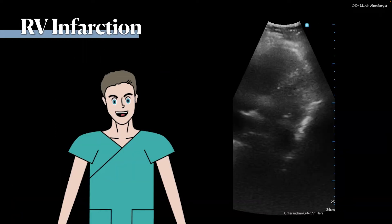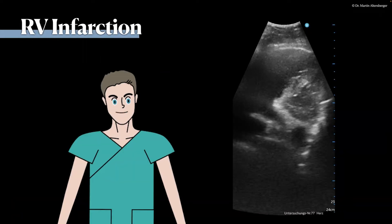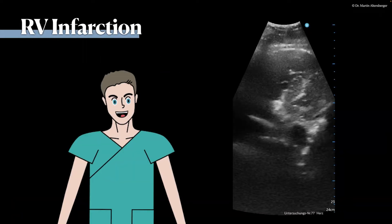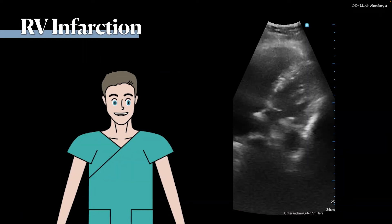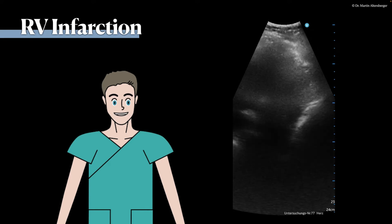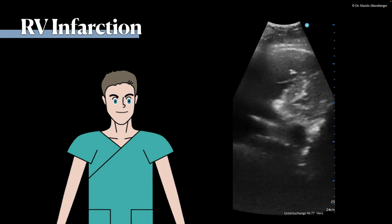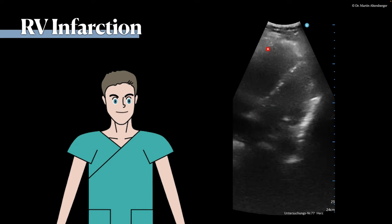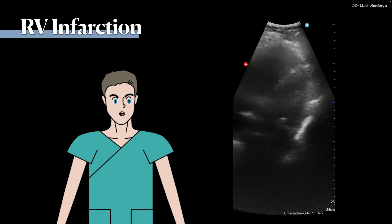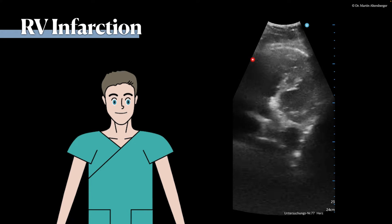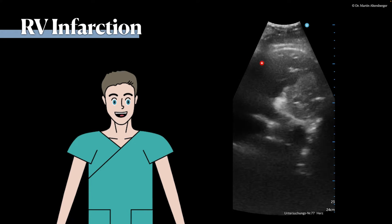What is the problem here? This was a case of an isolated right ventricular infarction. The parts of the right ventricle we can see are akinetic.